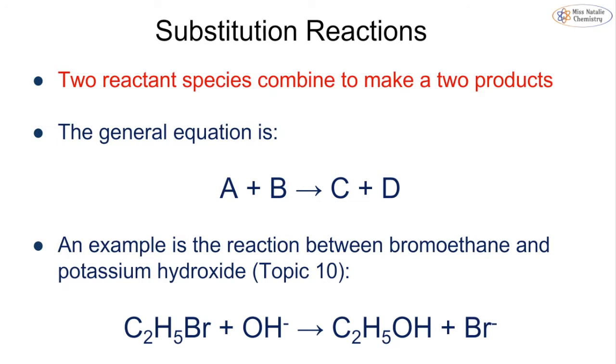There are also substitution reactions, which you've seen basic versions of in IGCSE. This is where we have two reactant species combining to make two products, A plus B giving you C plus D. You'll see an example of this in topic 10 where we have the reaction between bromoethene and potassium hydroxide to form an alcohol. This will be discussed further in topic 10B and 10C.